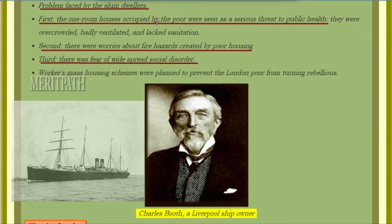The problems faced by slum dwellers were as follows. First, the one-room houses occupied by the poor were seen as a serious threat to public health — they were overcrowded, badly ventilated, and lacked sanitation. Second, there were worries about the fire hazards created by poor housing. Third, there was a fear of widespread social disorder. Workers' mass housing schemes were planned to prevent the London poor from turning rebellious.